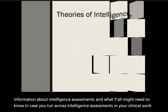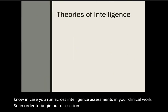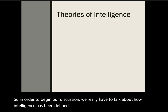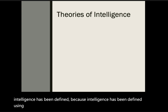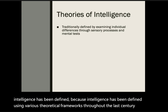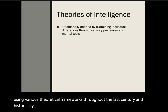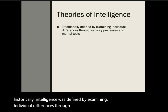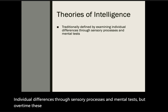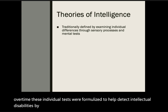In order to begin our discussion, we have to talk about how intelligence has been defined, because intelligence has been defined using various theoretical frameworks throughout the last century. Historically, intelligence was defined by examining individual differences through sensory processes and mental tests. Over time, these individual tests were formalized to help detect intellectual disabilities by interpreting a calculated IQ score.